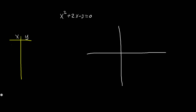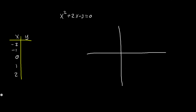We're going to start off with x values of negative 2, negative 1, 0, 1, and 2. When x is equal to 0 we're obviously going to get negative 3, because 0 squared plus 2 times 0 makes 0, which just leaves negative 3. So we're going to have a y value of negative 3.